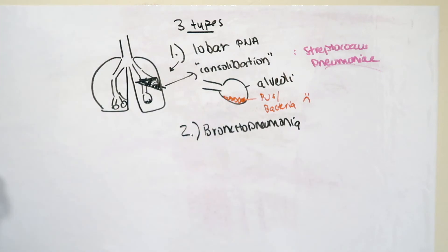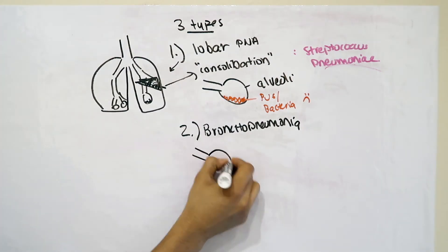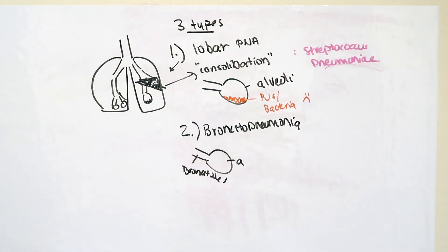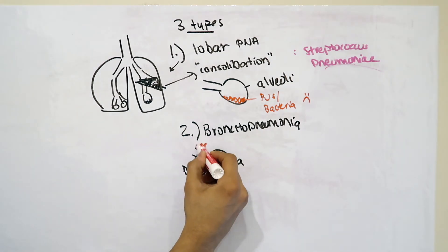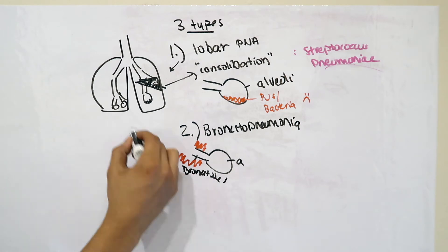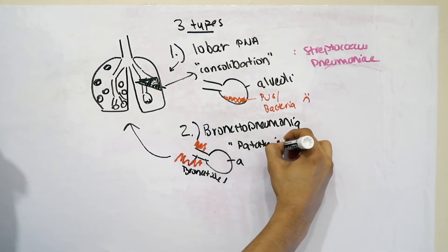The second type of pneumonia is called bronchopneumonia. Now, the reason we call it this is because if we were to draw out the alveoli and the bronchioles again, this infection infects the bronchiolar airspaces sort of close to the alveoli, not quite as consolidative as the lobar pneumonia. Because of this pattern of infection, you'll get what's called patchy infiltrates throughout the lungs.